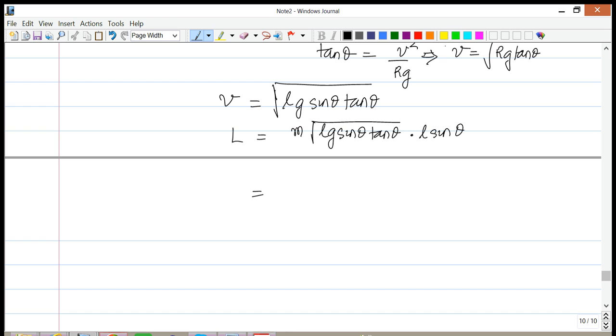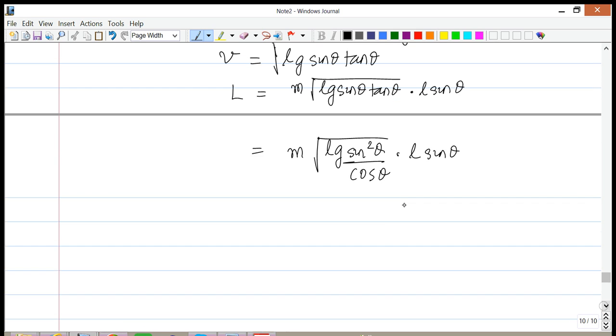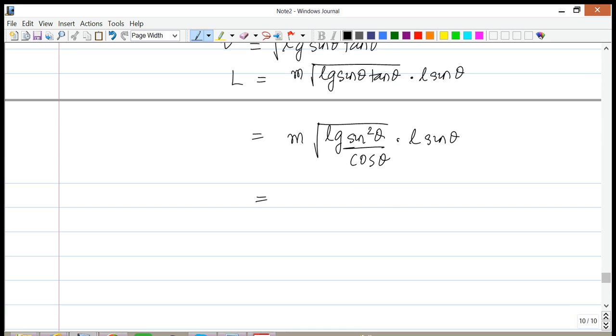Then I can simplify this out. You can write the tan theta as sine over cosine theta and end up getting an expression that looks like M times square root of LG sine squared theta over cosine theta times L sine theta. You can leave it this way or you can simplify it.